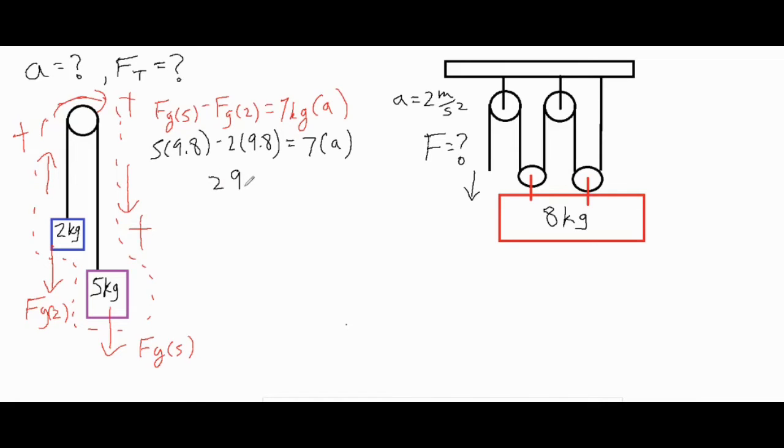That leaves us with 29.4 newtons equals seven kilograms times a, because five times 9.8 is 49, two times 9.8 is 19.6, subtract the two and you got 29.4. Go ahead and finish off by dividing each side by seven and then you have your acceleration of the system which is 4.2 meters per second squared.